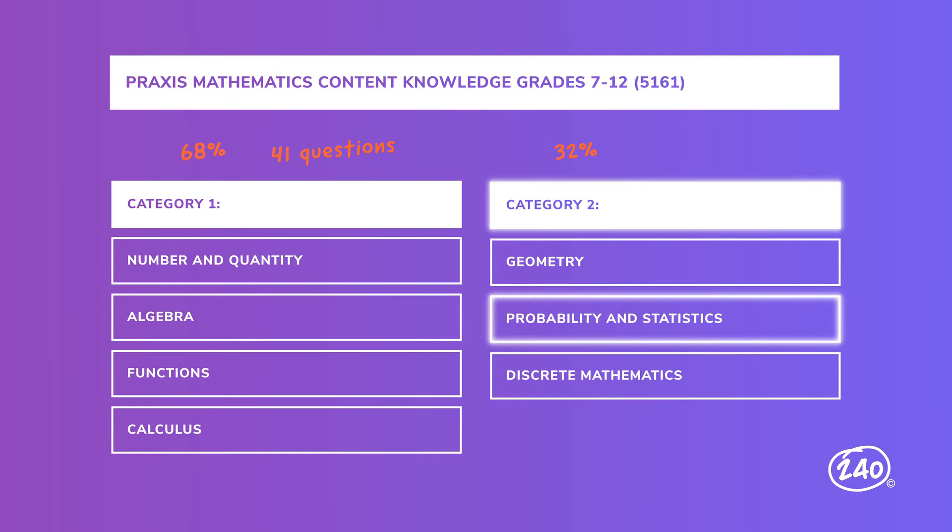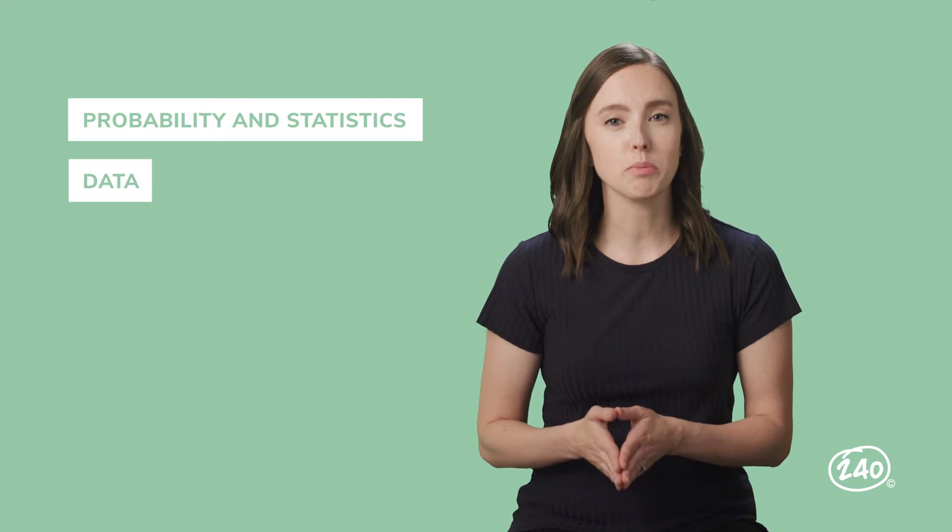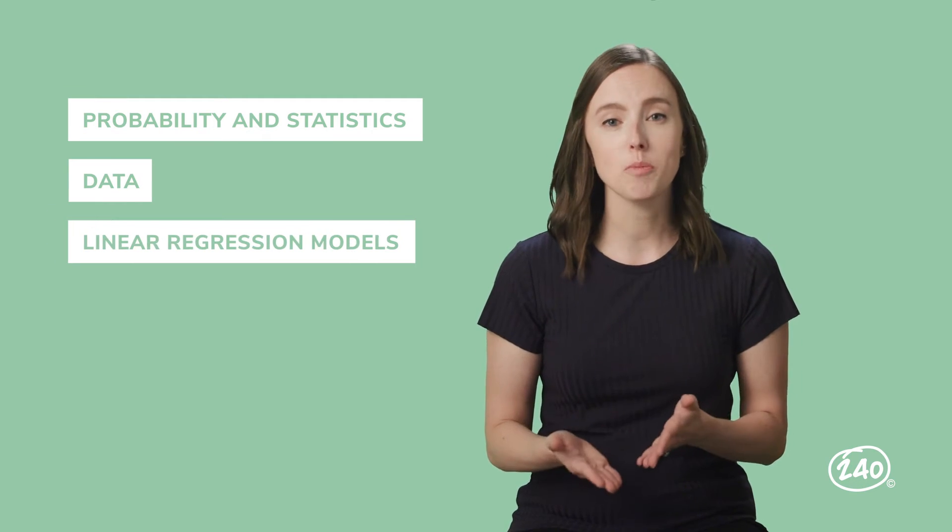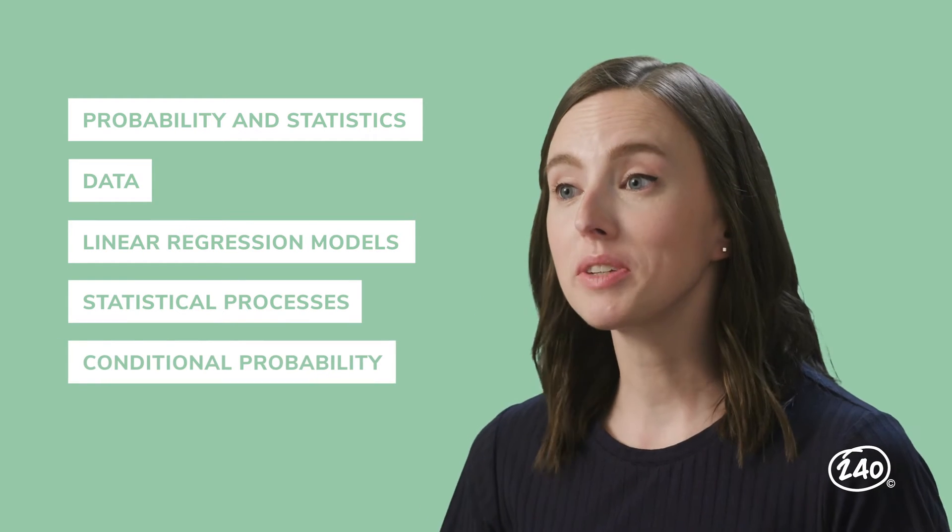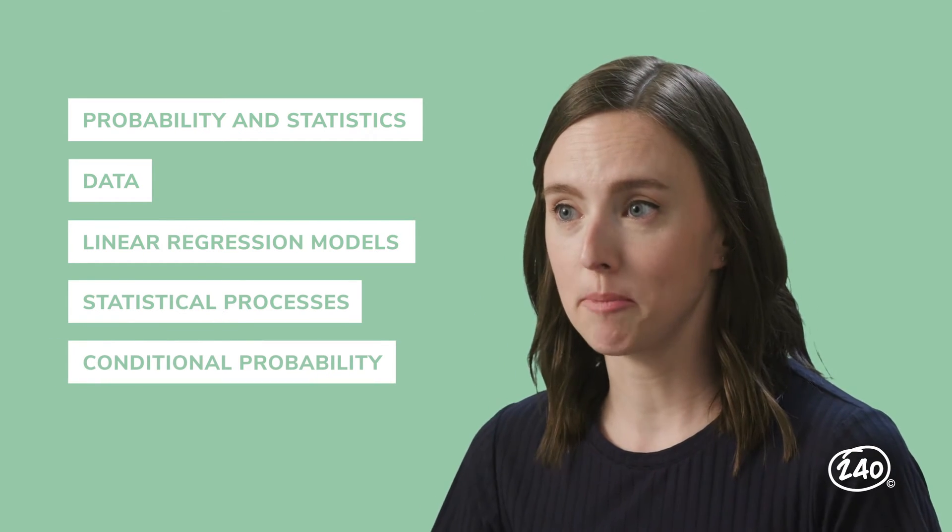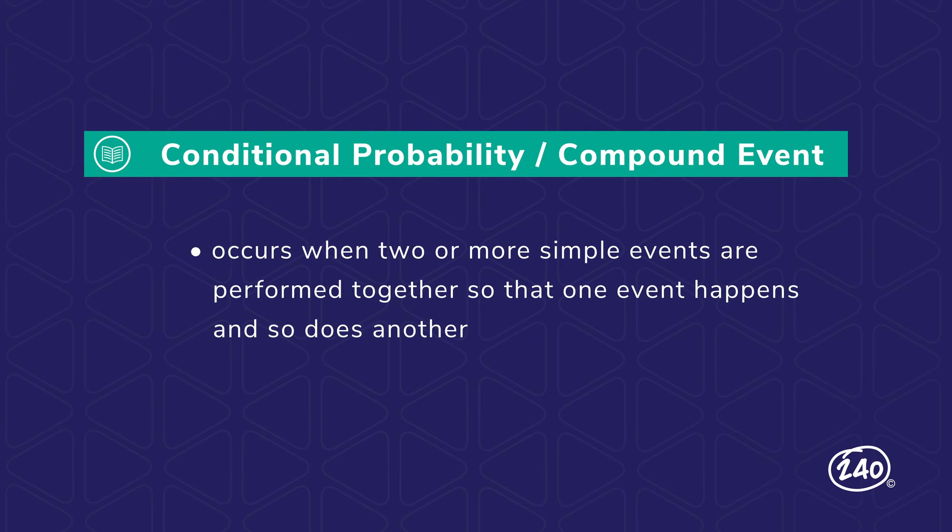Probability and statistics are up next. In this section, you're going to need to summarize, represent, interpret, and generally just deal with data. You'll need to know about linear regression models and how to evaluate different statistical processes. You'll also need to understand conditional probability and how to use simulations to construct experimental probability. Since conditional probability seems to come up a lot, let's look a little more closely at that. Conditional probability, also called a compound event, occurs when two or more simple events are performed together, so that one event happens and so does another. So basically, we're leveling up on your standard probability.